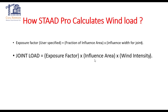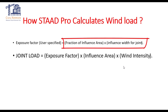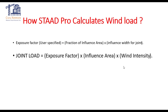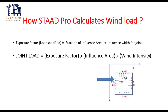The exposure factor you specify is calculated as the fraction of the influence area times the influence width for the joint. In the case of the Indian code, you are already aware of the factor that accounts for the difference between the external pressure coefficient and internal pressure coefficient. Similarly, here the exposure factor is considered in terms of that parameter.